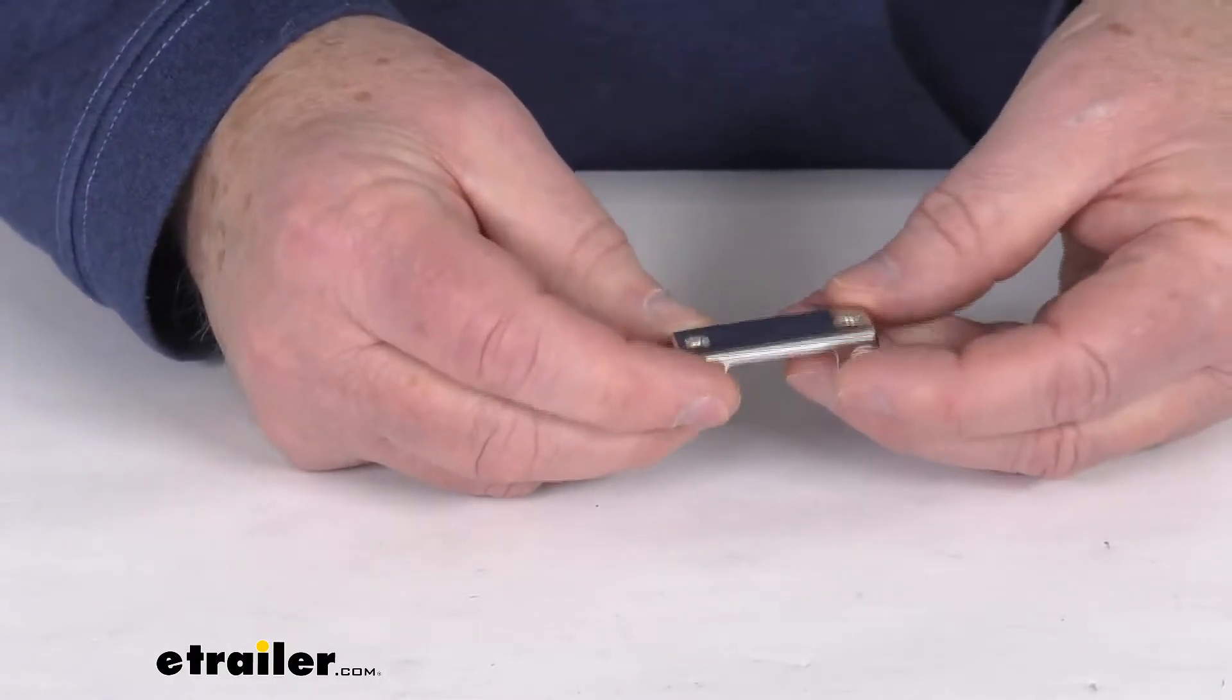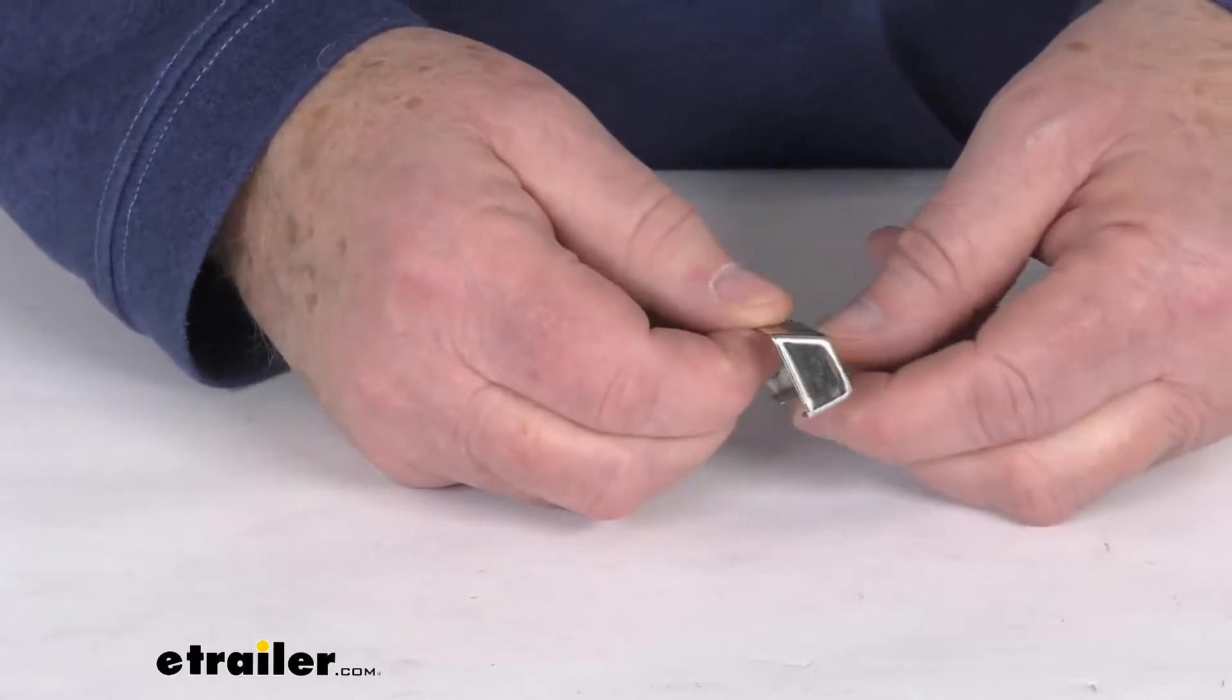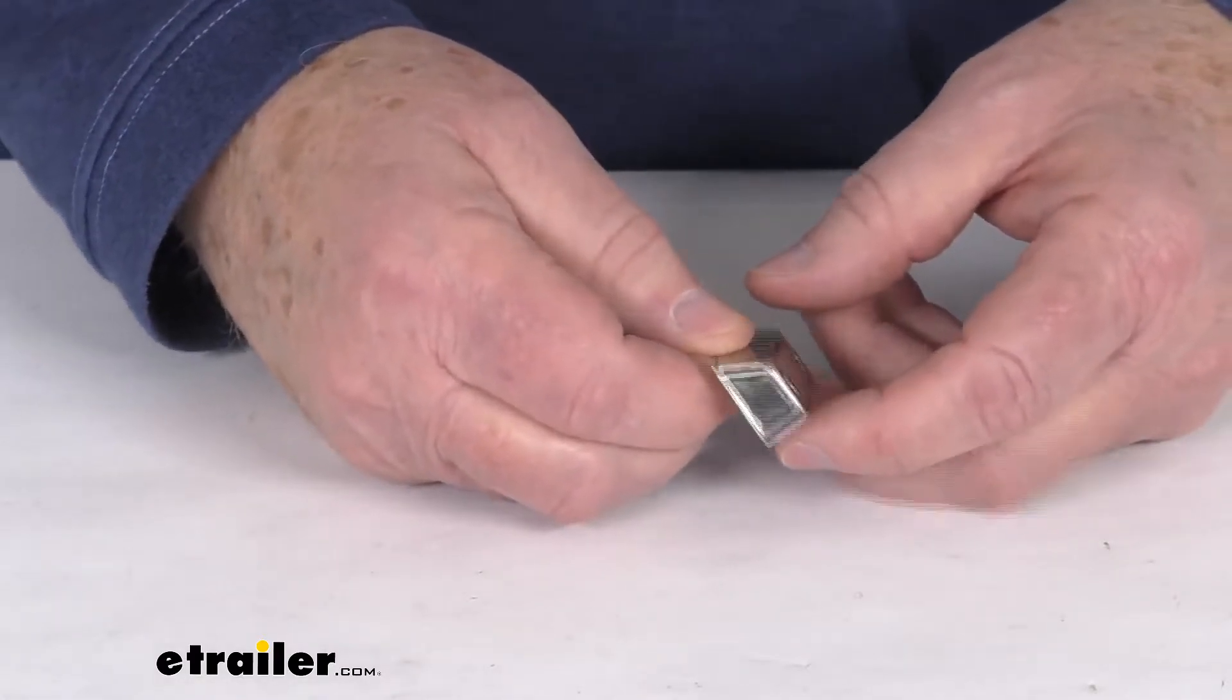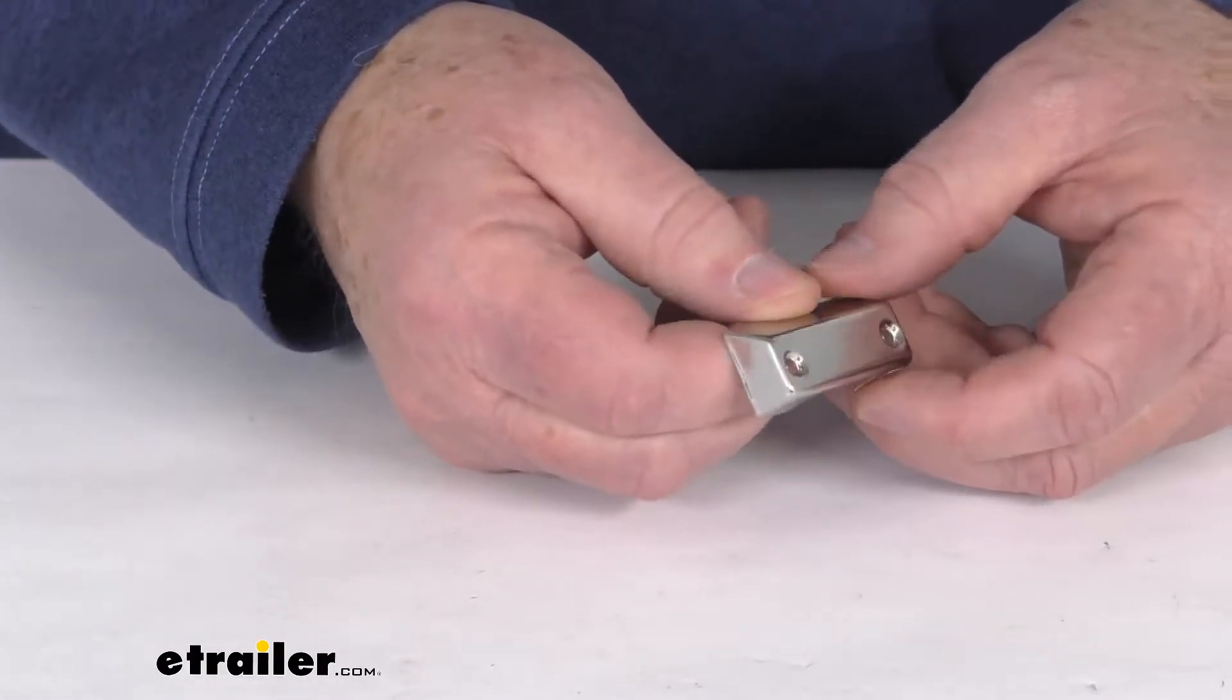Now this is a rust-proof stainless steel cover that'll provide a nice protective case for your light and it'll let you mount your Technique Mini LED Accent Light to your boat.